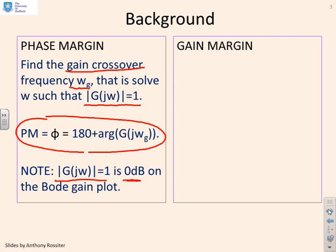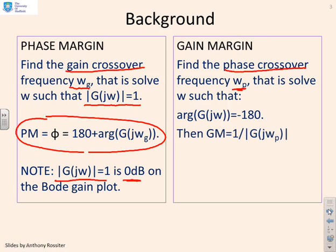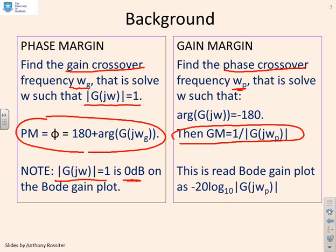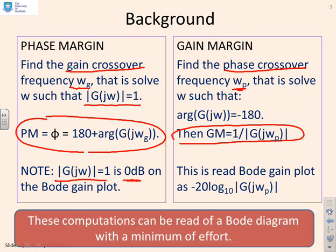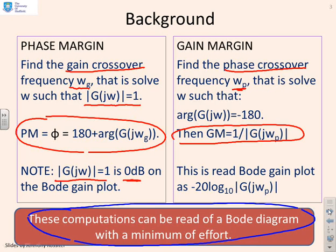For the gain margin, the procedure is first to find the phase crossover frequency, omega p — find an omega such that the arg of G(jω) equals minus 180. Once you've done that, the gain margin is given by 1 over the modulus of G(jω_p). That can also be read directly from the gain plot. The key thing to remember is that if you have a Bode diagram, these computations take a minimum of effort — you can do them pretty much by inspection.